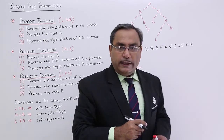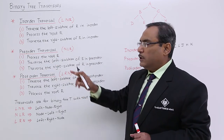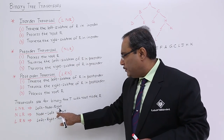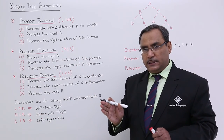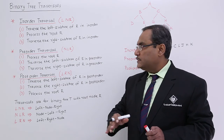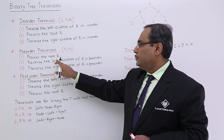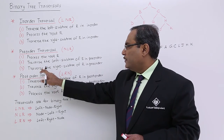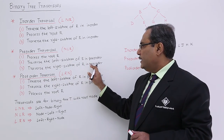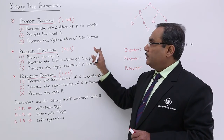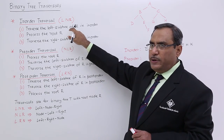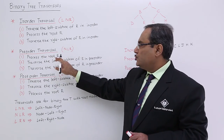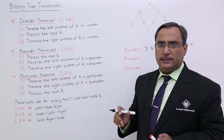Now we go for the next one: preorder traversal. We write this as NLR — node, left, right. So the root will come first, then the left subtree will be traversed, then the right subtree. Process the root, traverse the left subtree of R in preorder traversal, and traverse the right subtree of R in preorder traversal. In inorder the root was in between; here the root processing is first — so preorder.